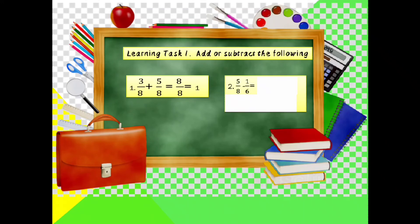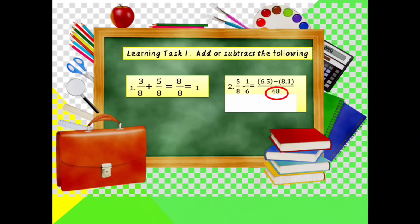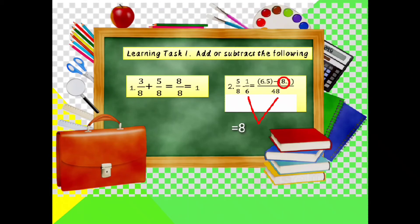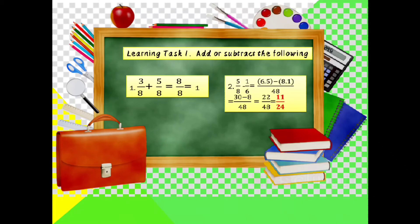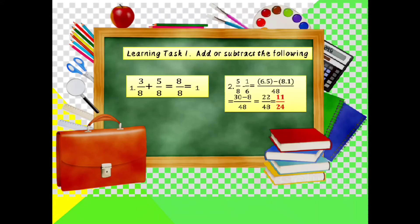Example number 2: 5 over 8 minus 1 over 6. Since the denominators are different, multiply 8 times 6 to get 48 as the common denominator. For the numerator: 48 divided by 8 is 6, times 5 is 30; minus 48 divided by 6 is 8, times 1 is 8. So 30 minus 8 equals 22, giving 22 over 48. To find the lowest term, divide both by 2: the final answer is 11 over 24.